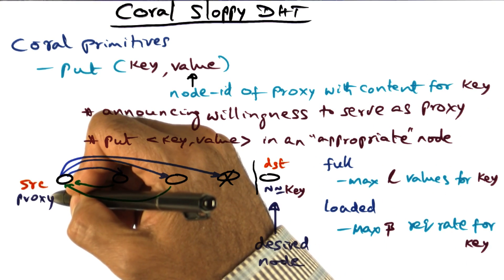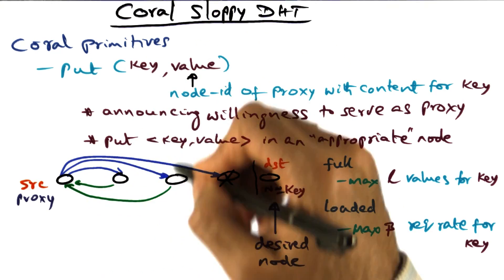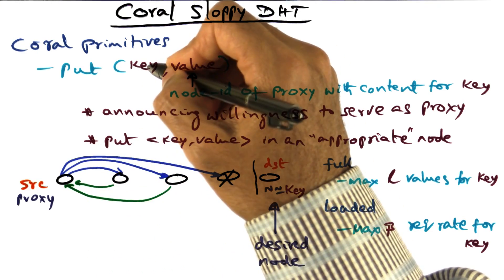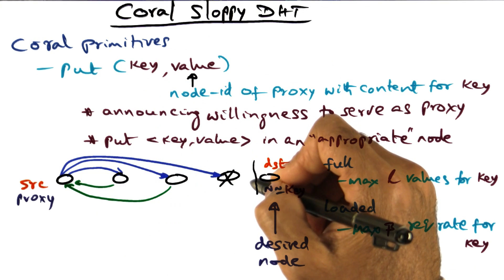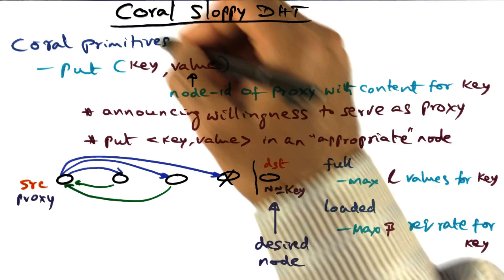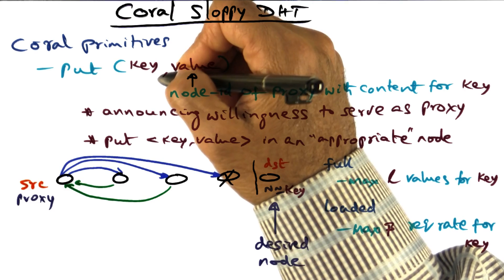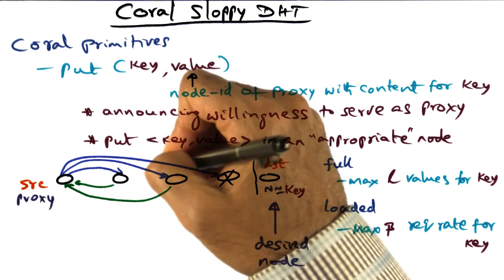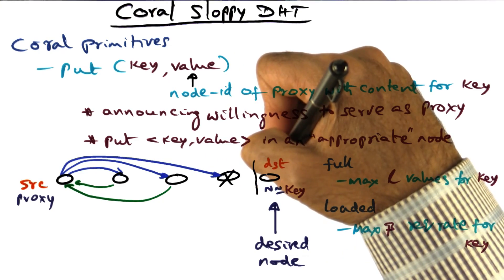What does that mean? Well, I'm going to take the key and even if I have the node ID that is equal to this key, I'm not going to go to him directly. Remember that the Coral key-based routing algorithm reduces the distance by half.